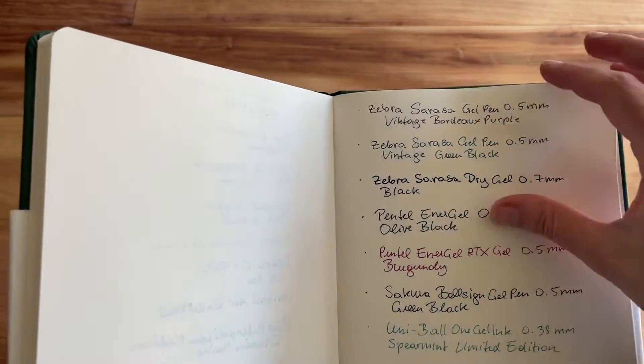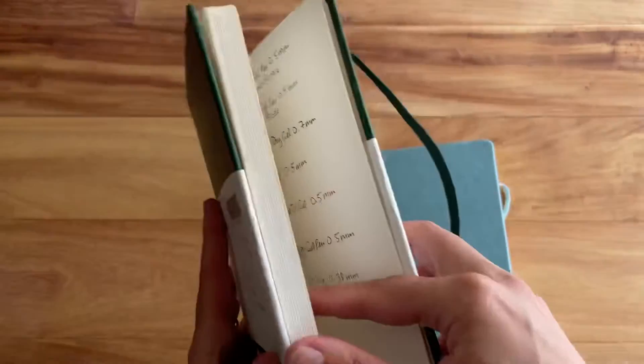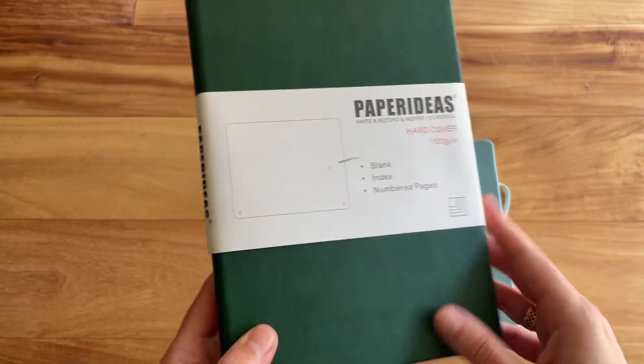This is going to be for my next video where I show you all the pens I got from my stationery haul. So this is, as I said, the green one. It is essentially the same notebook as the Iceberg one, just this one is blank.